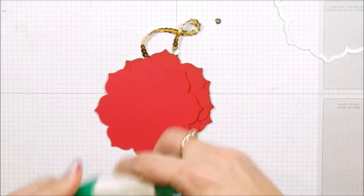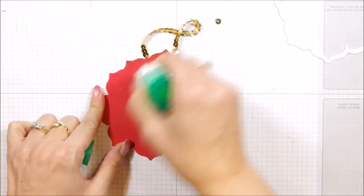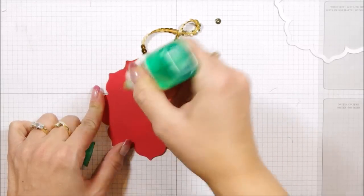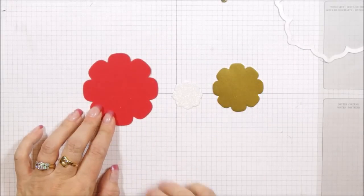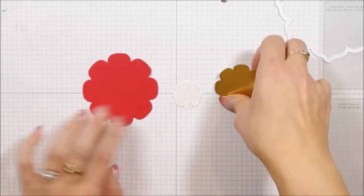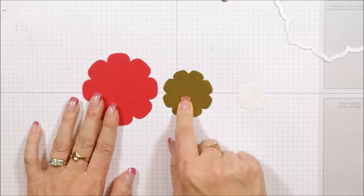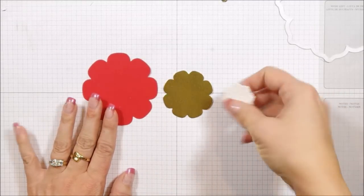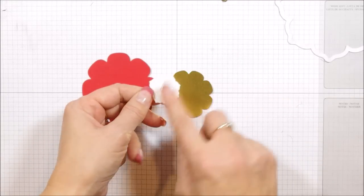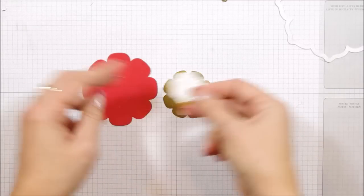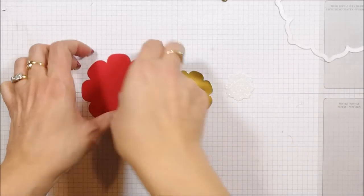Now this one I'm just going to use some of our Tombow. So I've pre-cut three other flowers using the exact same framelits in real red, and then we have our gold foil paper, and then our Dazzling Diamonds Glimmer paper, which just will add a lot of pop and shine at the very top.